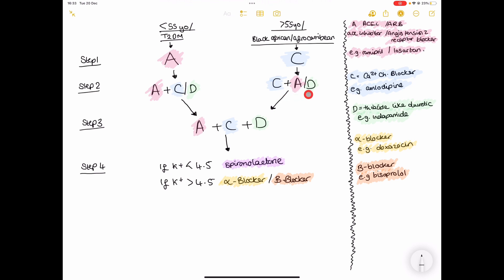Again, ensure that the patient is tolerating and is on the maximum dose for them. And if the blood pressure is still not controlled, then you move on to step three, which is adding whichever medication is left, basically. So it's A plus C plus D.